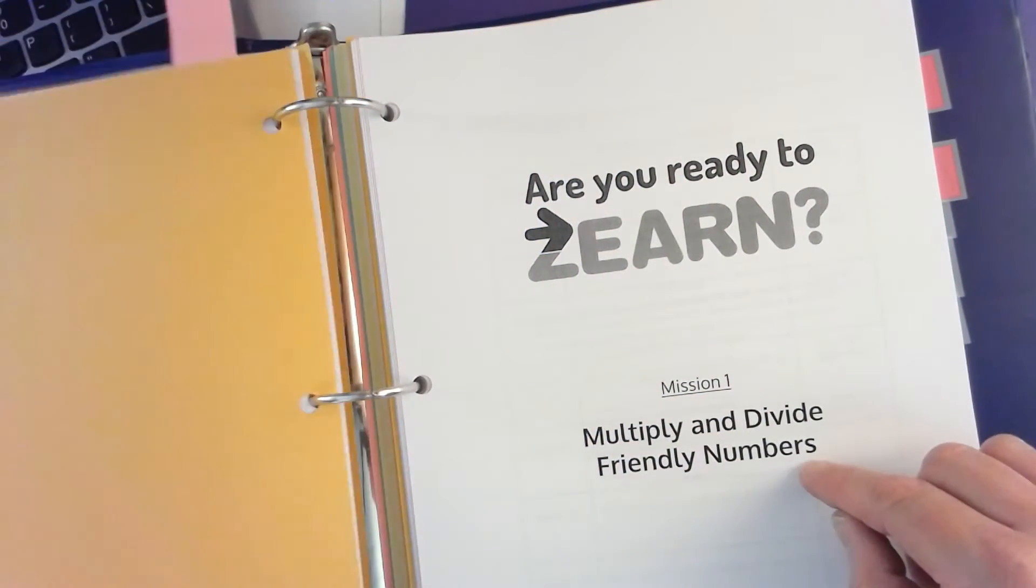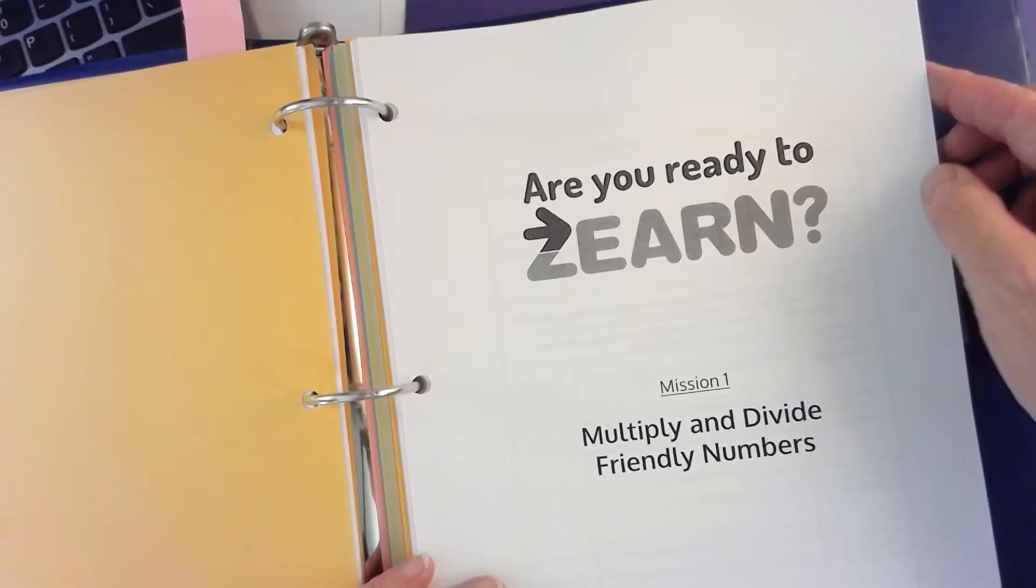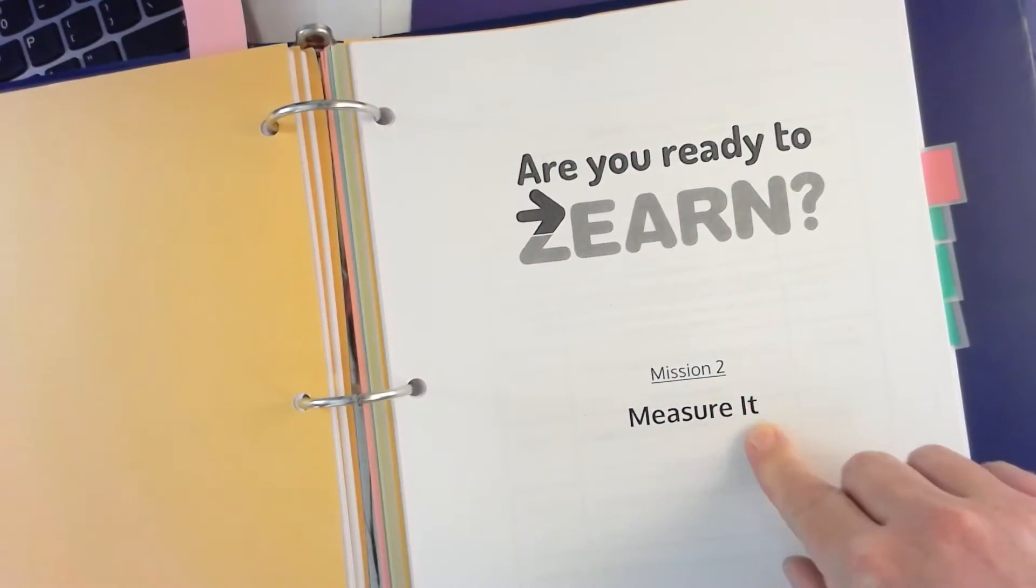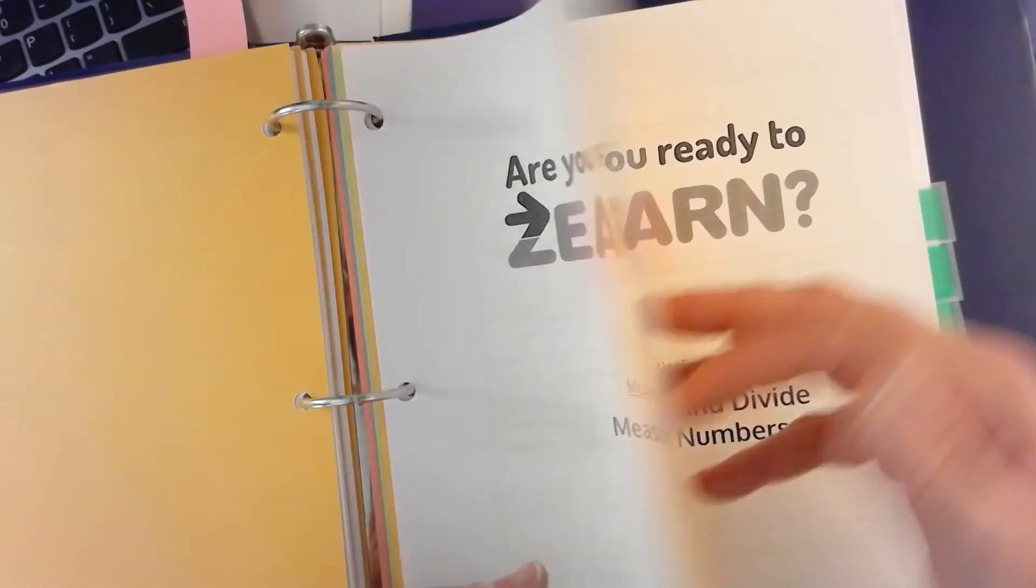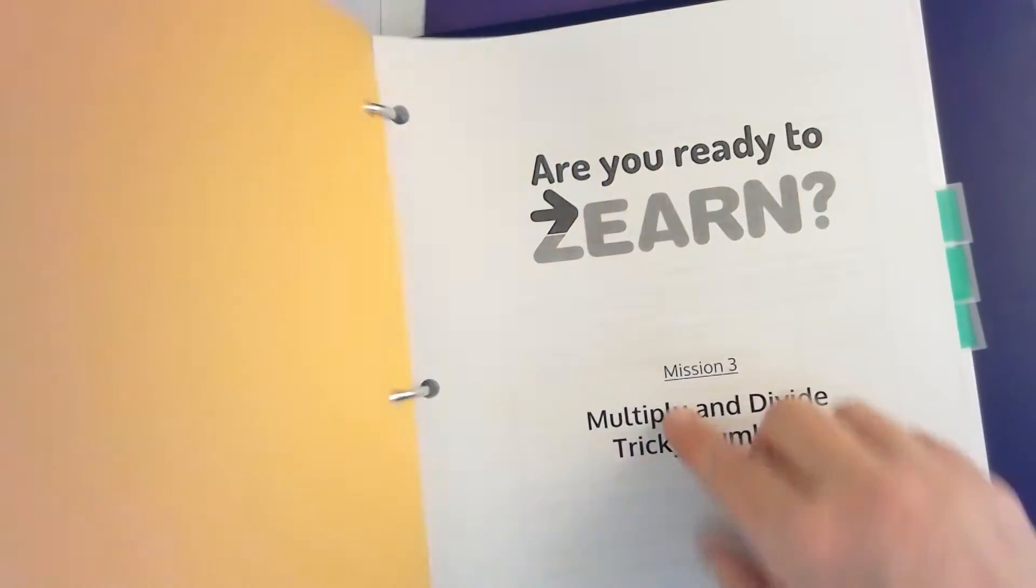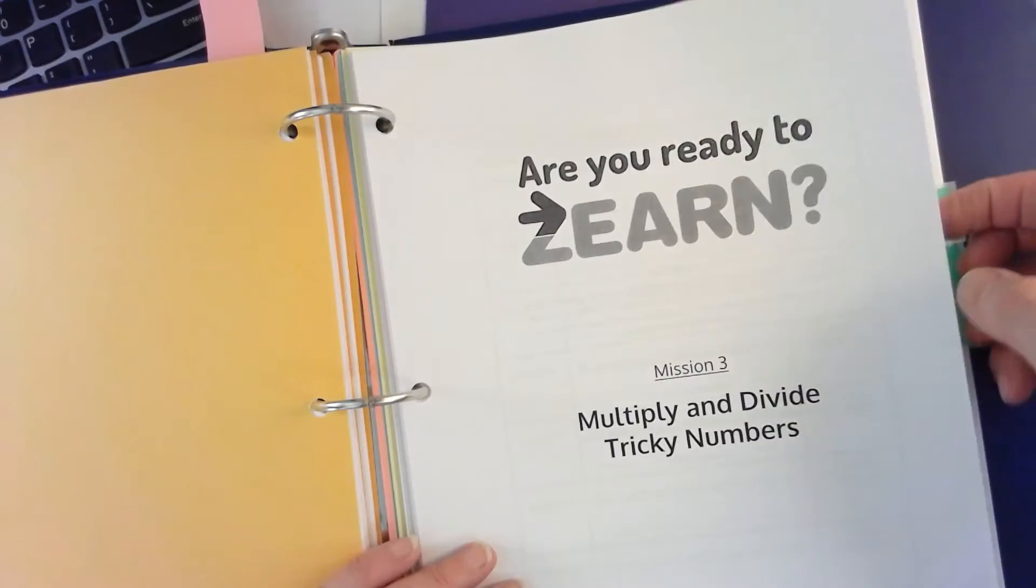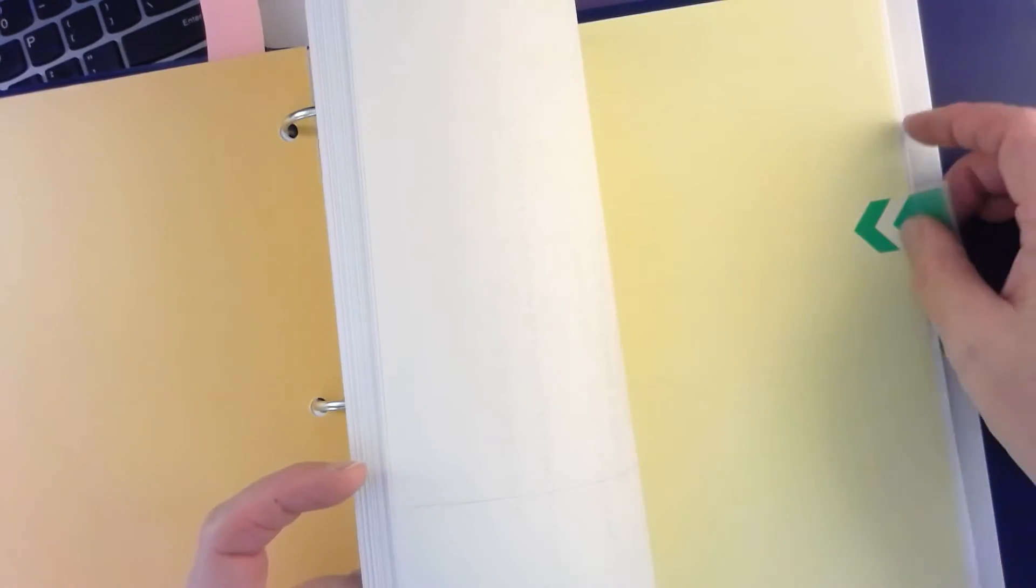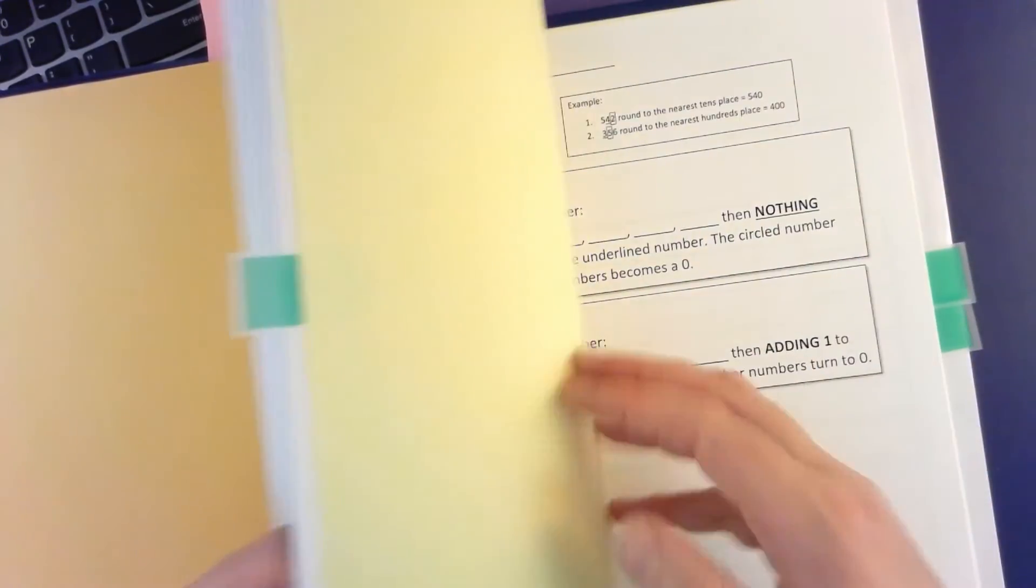And then another Zern lesson which is measure it. Keep going, another tab and this says multiply and divide tricky numbers.